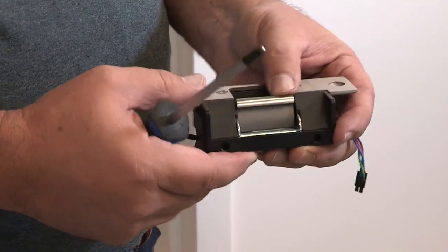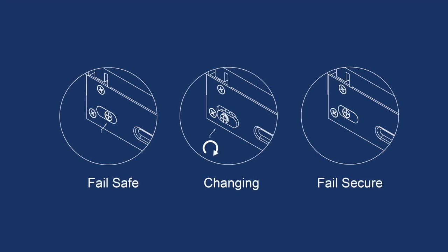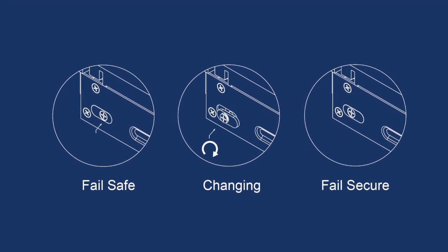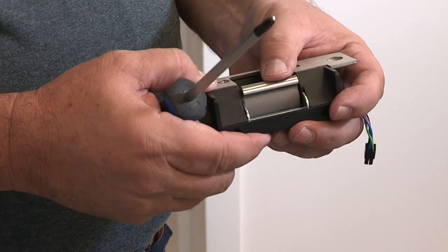Fail-safe means that the setting will unlock the strike upon losing power, and a fail-secure setting will lock the strike upon losing power. This strike is fail-secure.